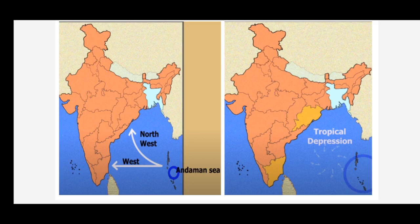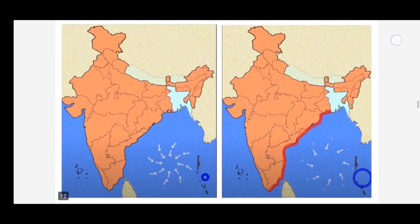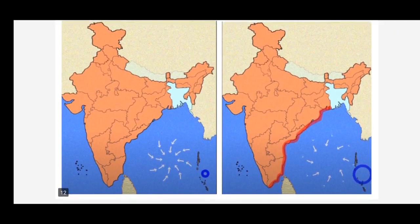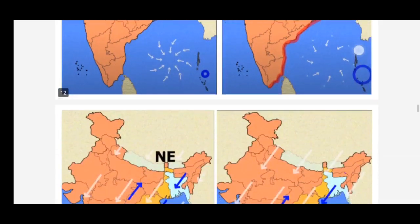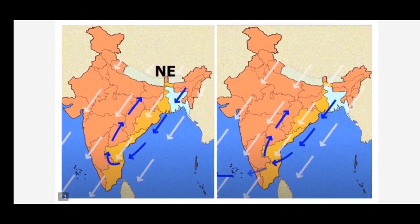These winds also result in storms caused by tropical depressions — that is, low pressure systems originating in the Bay of Bengal due to local variations of heat and moisture. Whenever these storms occur, they cause great loss of life and property due to heavy rains in the eastern coastal regions of India. The areas vulnerable to these storms are the coastal regions of Tamil Nadu, Andhra Pradesh, Odisha, and West Bengal.